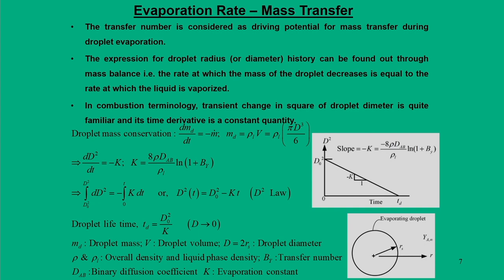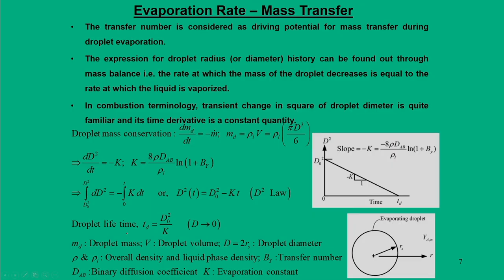When the droplet comes out of the injector it has some finite diameter and finally the diameter vanishes with time — when the fuel droplet evaporates the diameter shrinks to zero. When that condition happens we call it the droplet lifetime. Droplet lifetime means the initial diameter d₀ shrinks to zero diameter at a certain time frame.